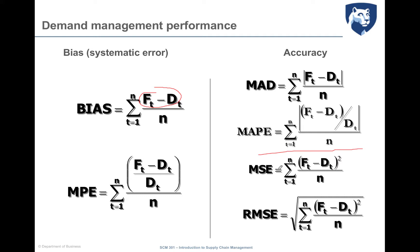I can also calculate the mean squared error, which is the variance of the error — the difference between forecast and demand squared — to enhance big differences, then averaged. If I take the square root of this value, I obtain the root mean squared error, which is the standard deviation of the forecast error, telling me the confidence interval of my forecast — how much my forecast can differ by plus or minus the root mean squared error.